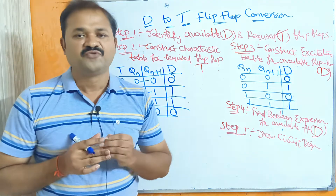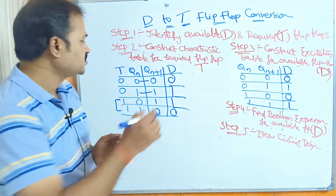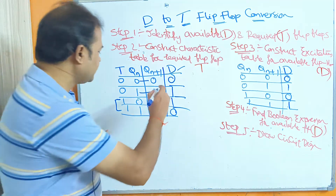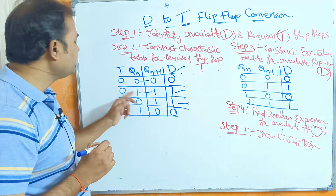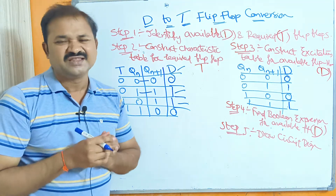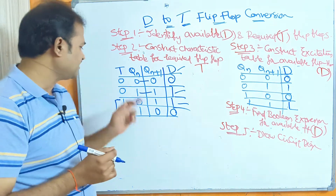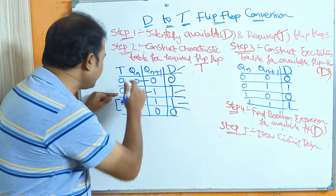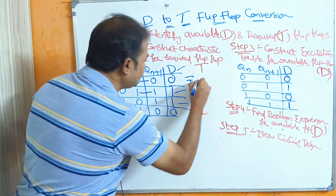Step 4 is to find the Boolean expression for the available flip-flop, which is D. Observing the D column, we have two ones: the first when T=0 and Qn=1, and the second when T=1 and Qn=0. There is no need for a Karnaugh map for simplification; we can write it directly.